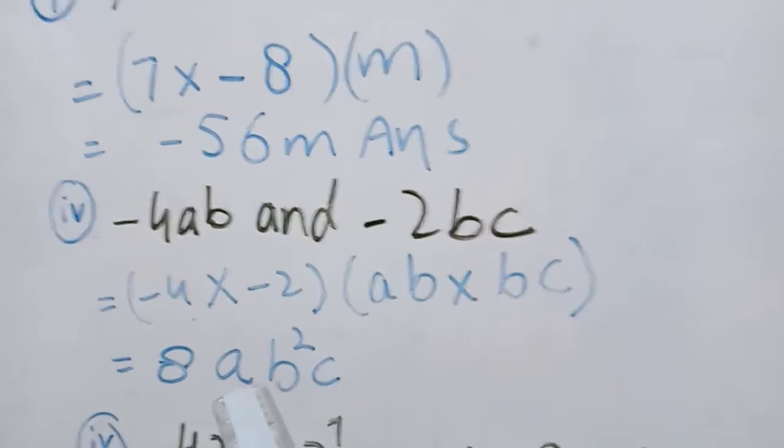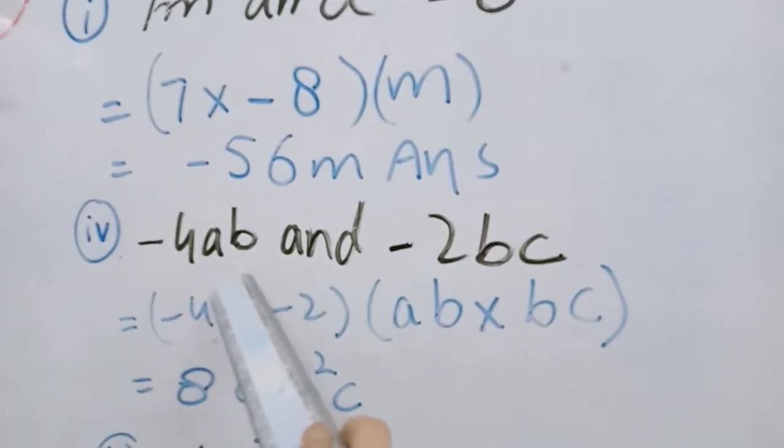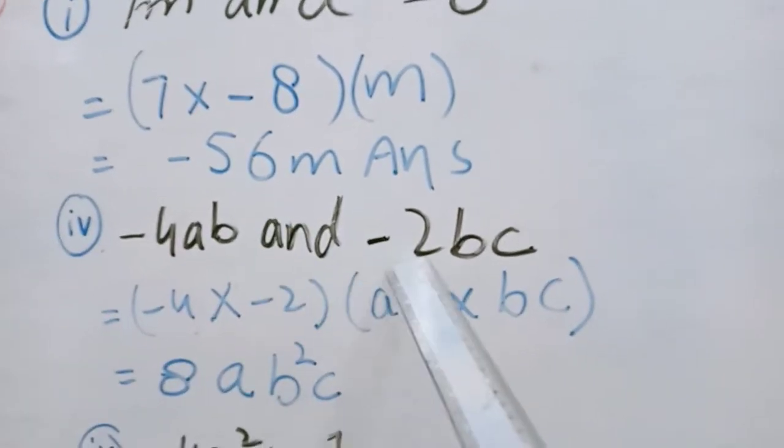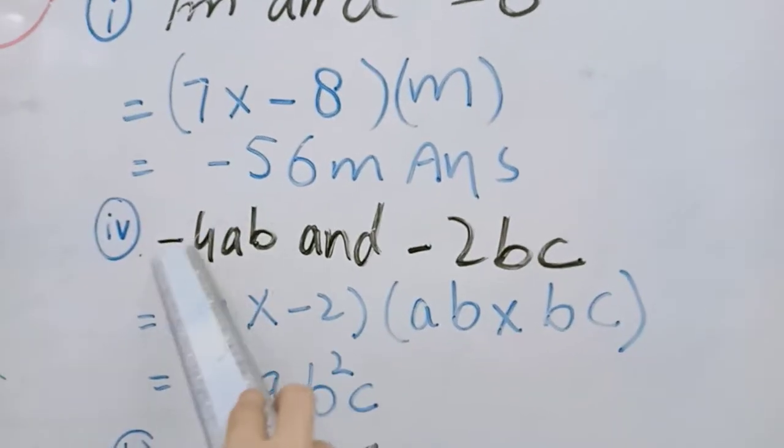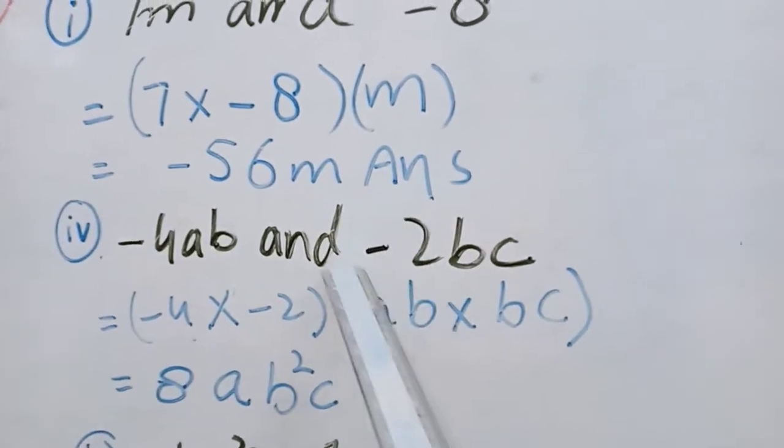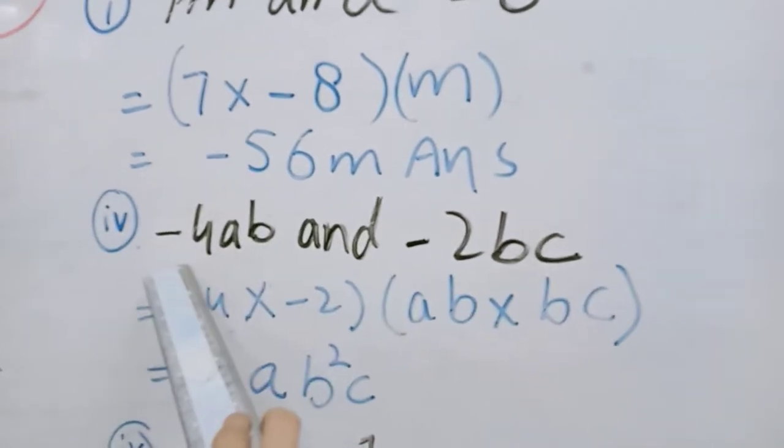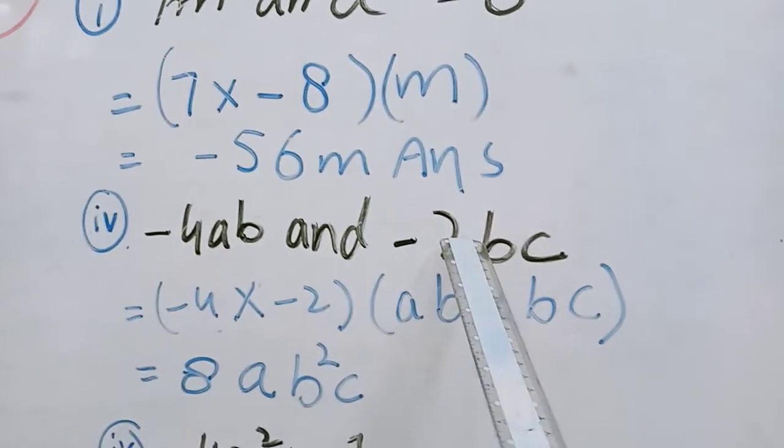In fourth part we have minus 4ab and minus 2bc. Now we have minus 4 here and minus 2 here. We multiply these both values with each other.